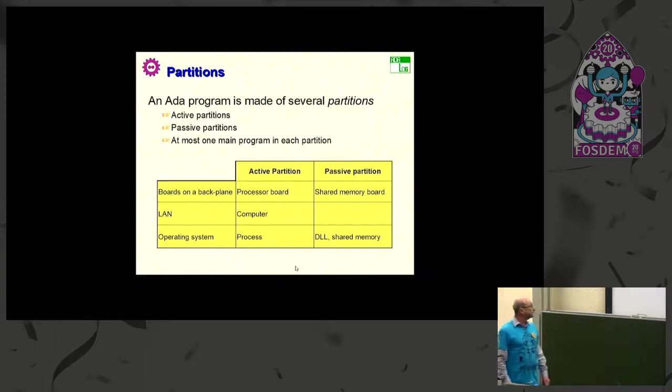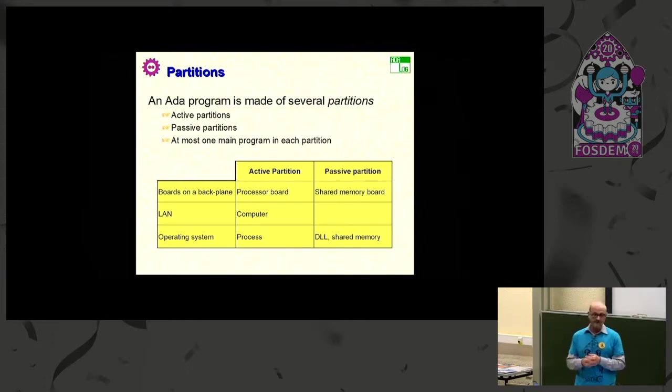This maps to different patterns. For example, if you imagine hardware boards plugged in a backplane, so an active partition will be a processor board with a CPU and whatever. But a passive partition will be a memory board. You can have RAM for variables, RAM where you have the code of your subprograms, but nothing that can run directly on the board. On a local area network, it's classical stuff with computers. You may wonder how you could make passive partitions. Actually, Gnat manages to be able to have passive partitions. Each variable is modeled as a file over NFS. Not very efficient, but it works. And it provides you with persistence by the same token. It can be quite interesting if you don't abuse it.